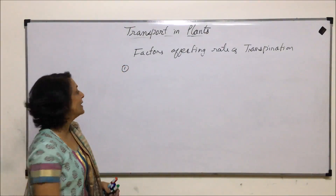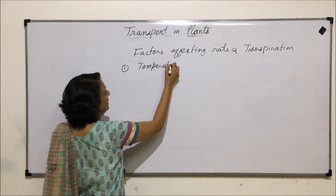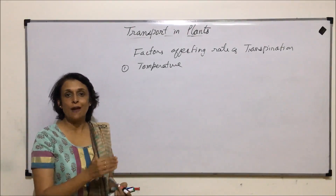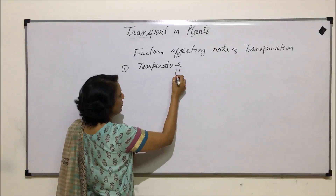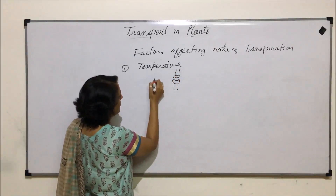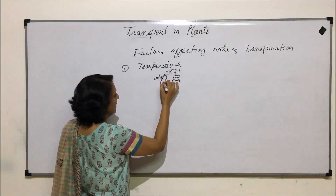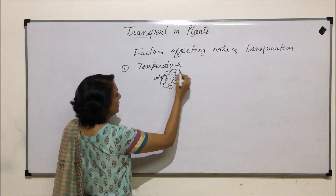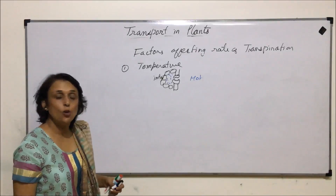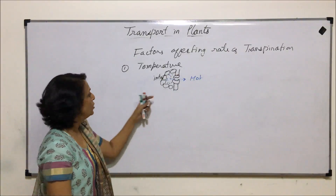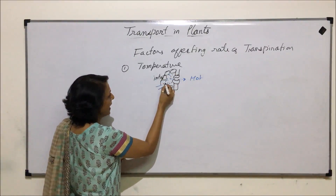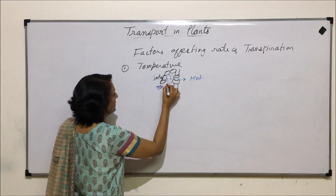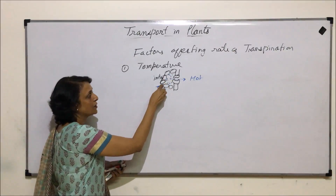One factor which decides the rate is temperature. Higher the temperature, the rate of transpiration is going to be more. The reason is more water evaporates. Consider this stomata — this is the inside of the leaf, here is the parenchyma, and here is the xylem completely filled with water. Because of higher temperature, the water evaporates faster.